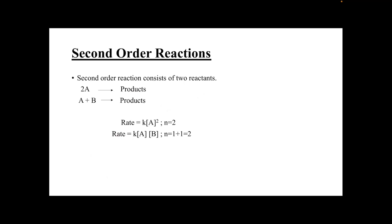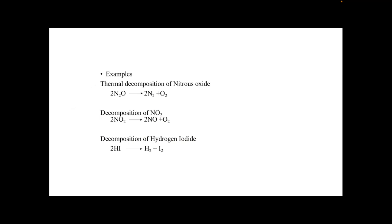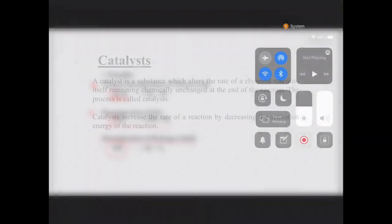Second-order reactions involve two reactant molecules — either two molecules of the same compound or two different compounds. The rate law involves the active mass of A raised to the power of 2, giving order 2, or two reactants each raised to power 1 giving an overall order of 2. Examples include: thermal decomposition of nitrous oxide, decomposition of nitrogen dioxide, and decomposition of hydrogen iodide.